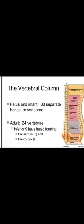The vertebral column forms a more or less rigid rod-like structure. It is located on the dorsal side of the body, forms the backbone, and protects the spinal cord. The vertebral column consists of 33 vertebrae.